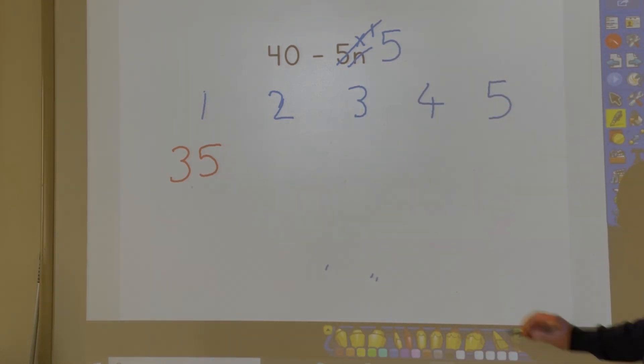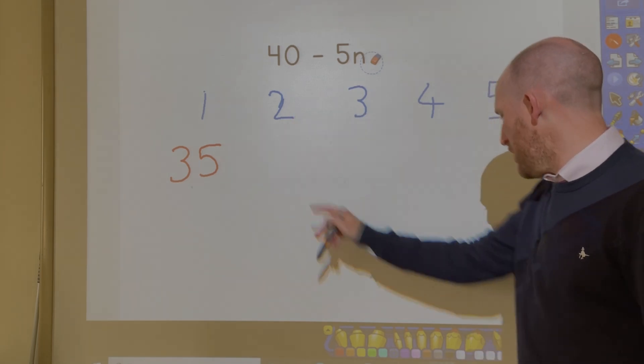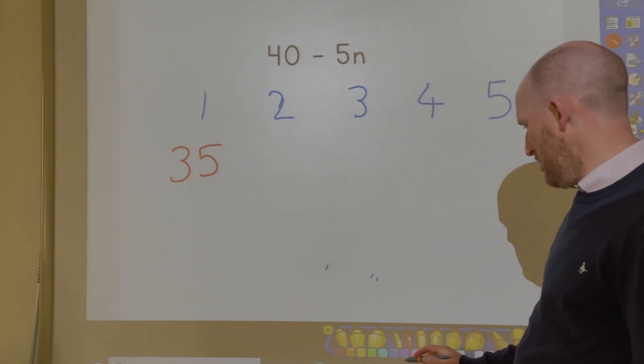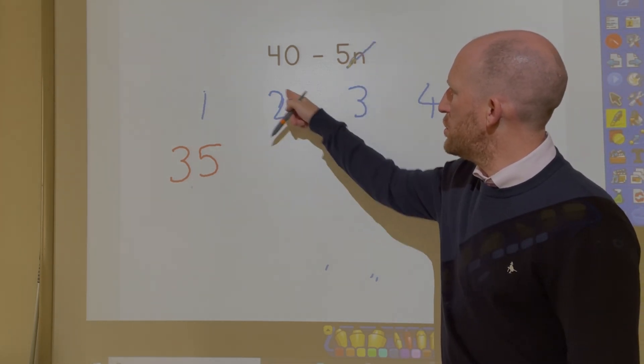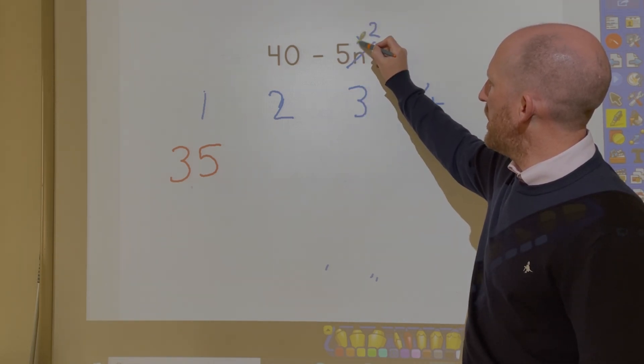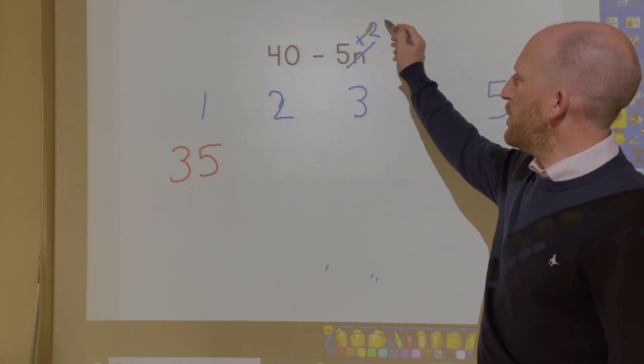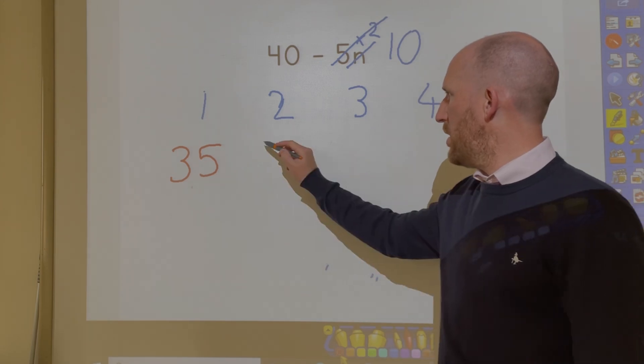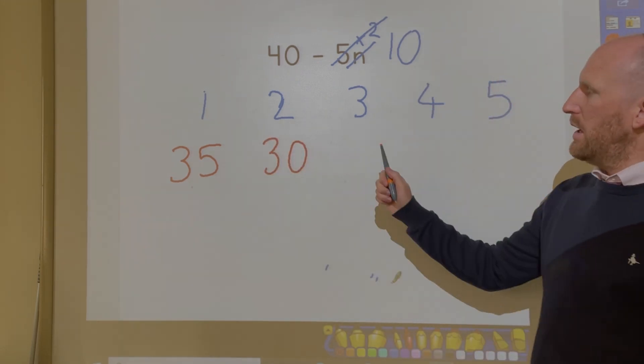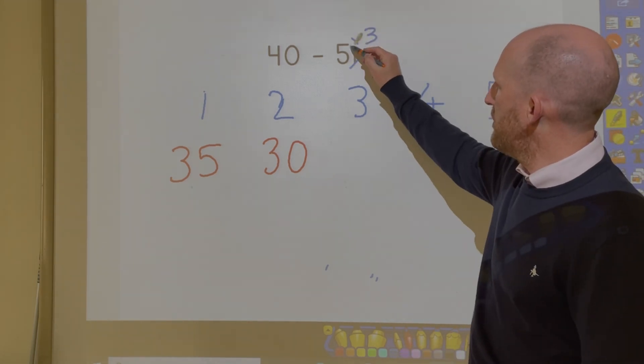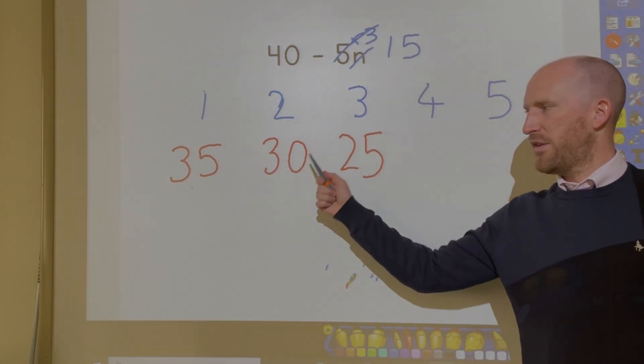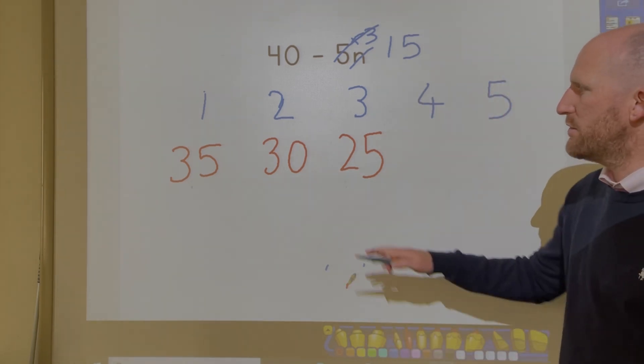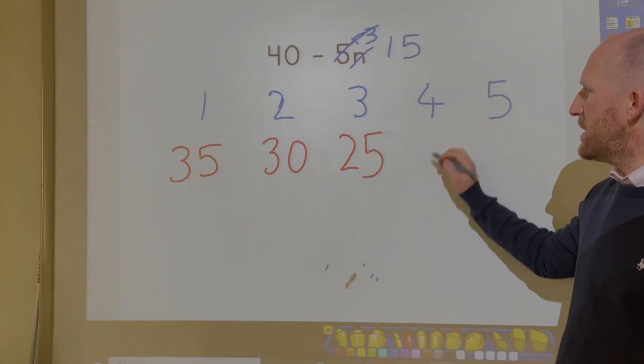How about if I want to find out the second number in the sequence? So I replace n with 2. And that is 5 multiplied by 2. 5 multiplied by 2 is 10. 40 take away 10 is 30. After you've done the first three numbers in linear number sequences, you can normally then just carry on because you've already worked out that the pattern is just take away 5 every time.